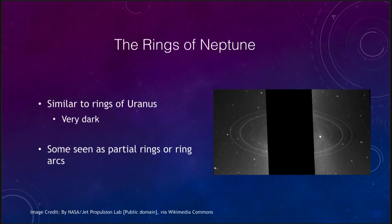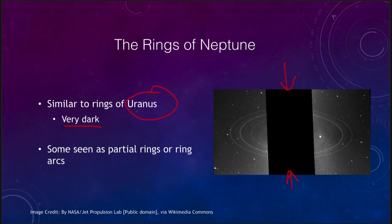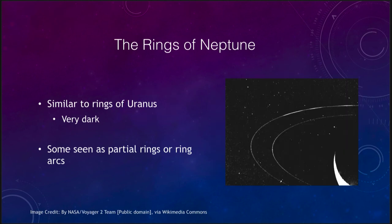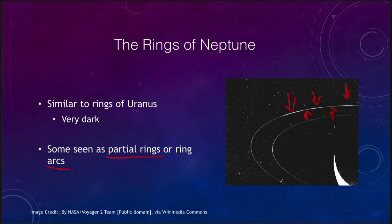Neptune has very, very dark rings — similar in many ways to those of Uranus — and we have to block out the planet's light just to see them, since it would overwhelm the very faint rings. They are seen as arcs sometimes, with denser areas and areas where there is less ring material. Unlike the rings of Saturn and Uranus, which seem relatively smooth, Neptune's rings are sometimes seen as partial rings or even just ring arcs.